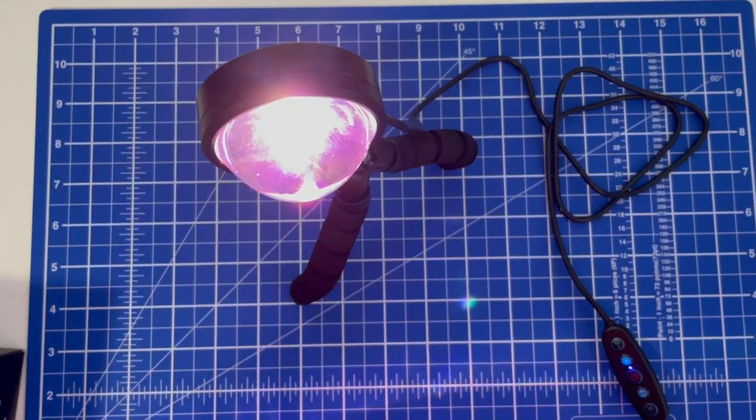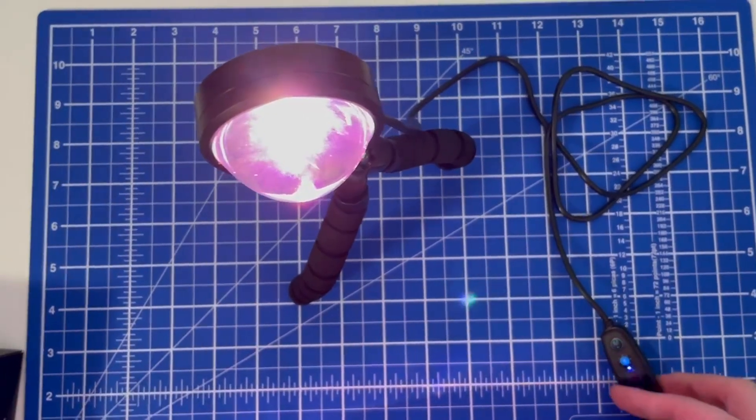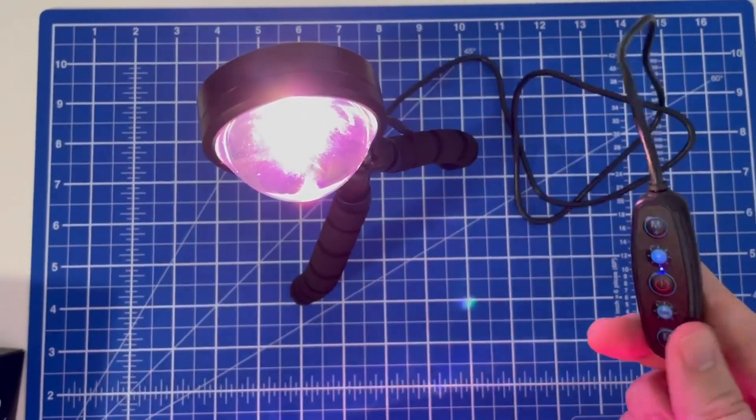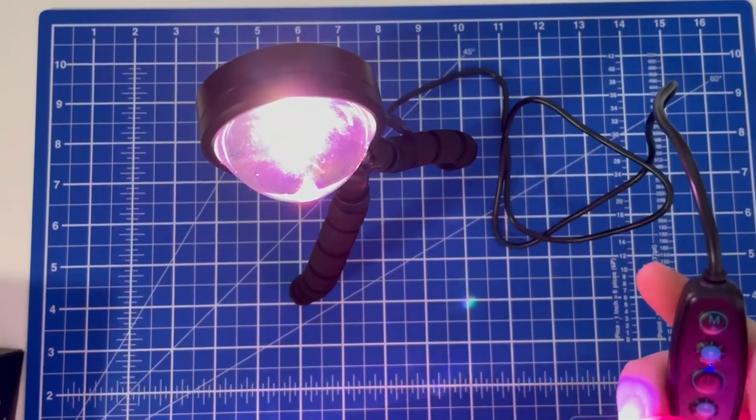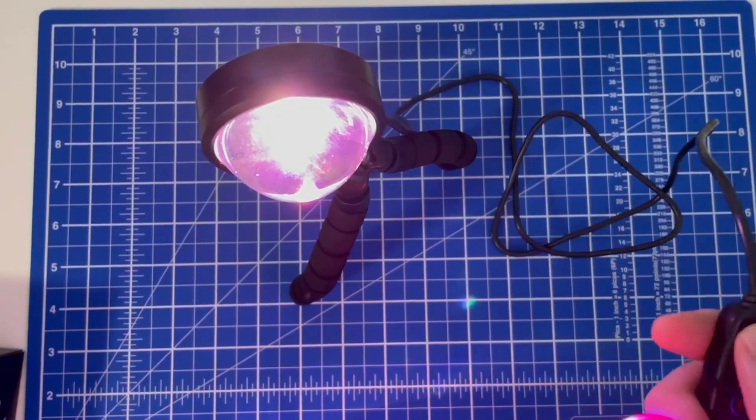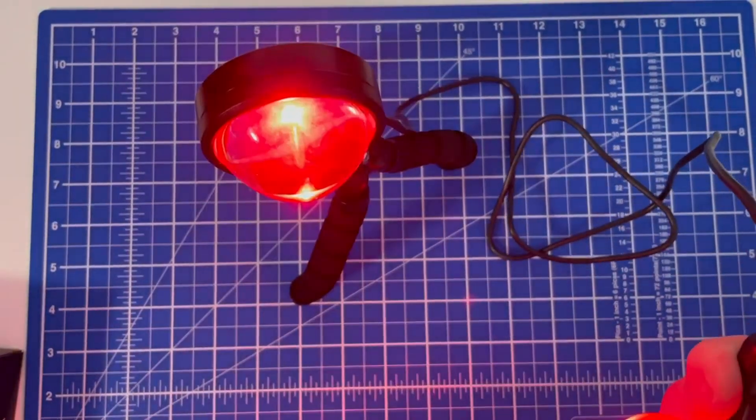Here is the rainbow projector lamp. You plug in the lamp with a USB power source and you have this controller where you can change different colors.